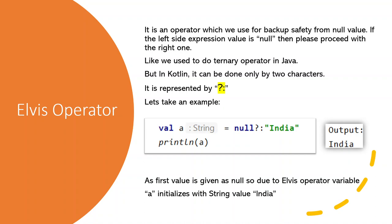It is represented by question mark with the colon. Let's take an example. var a of type String is equal to null with Elvis operator India. So when we print a, it will print the value as India because, as we can see, the first value is null.